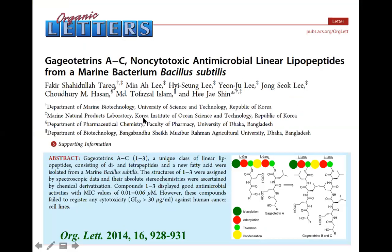Here we discovered Gageotetrins A, B, and C — three new compounds. They are non-cytotoxic antimicrobial linear lipopeptides. We tested them against cell lines and found all are non-cytotoxic — that is, human cell lines are not affected by these antibiotics. But these linear lipopeptides significantly inhibited the zoospores of Phytophthora capsici. They were discovered from a marine Bacillus subtilis isolated from the marine environment of South Korea. We collaborated on this work with Professor Shin of South Korea.